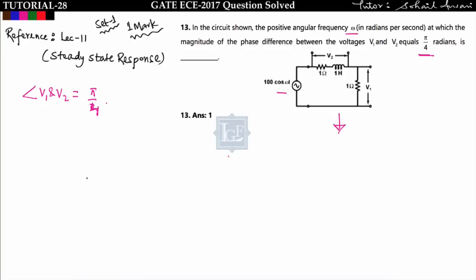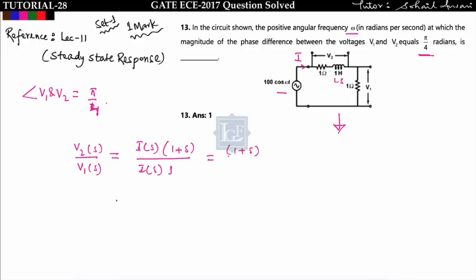I will make this circuit in the Laplace domain and find V2(s) upon V1(s). So V2(s) will be I(s) into impedance, which equals 1 plus Ls. Since L equals 1, that is 1 plus s. By V1(s), that equals I(s) into 1. So V2(s) upon V1(s) equals 1 plus s. This is the transfer function H(s), and the angle of H(s) equals tan inverse of omega by 1.